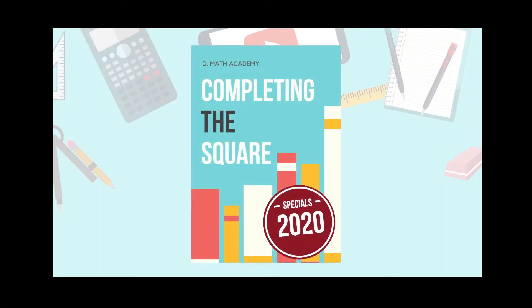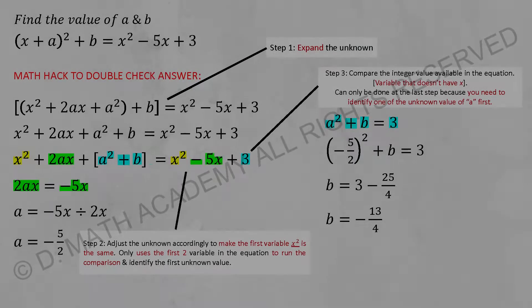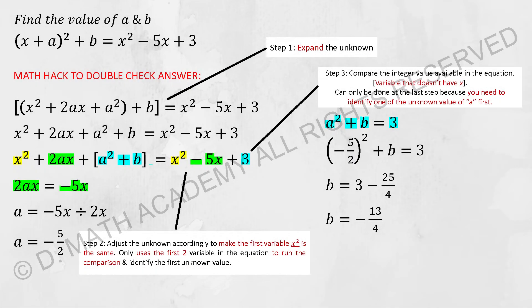For the next topic, completing the square. Usually they will ask you to identify certain unknowns from an existing equation that was given. There's actually two ways to identify it.